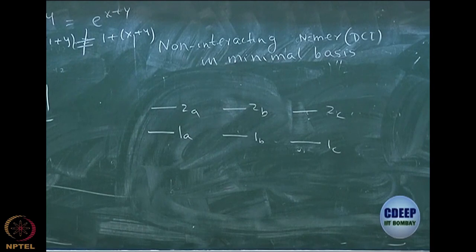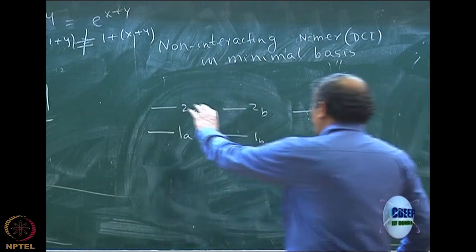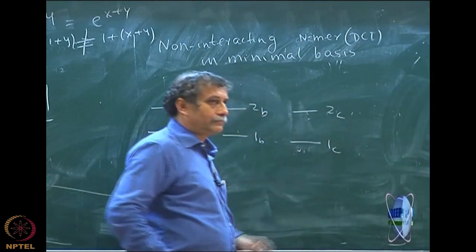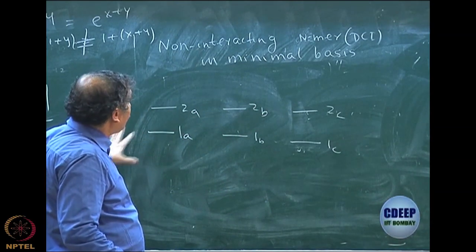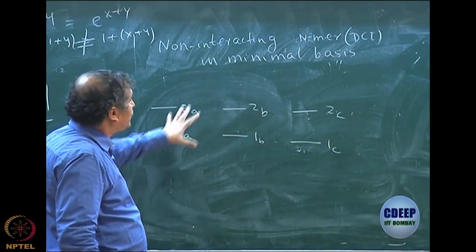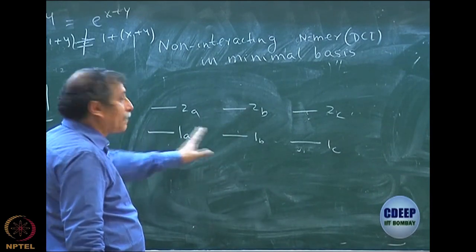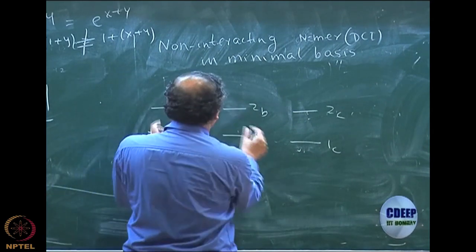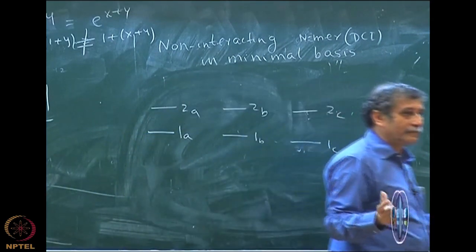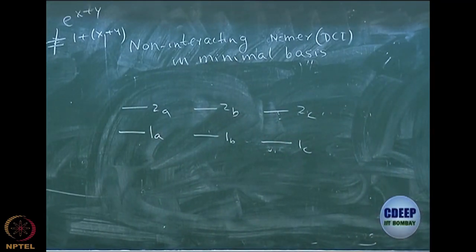If I do exact calculation, full CI, what will happen in DCI? When I do DCI, for each of them it is exact. But if I do DCI for the n-mer, you can see it is hopelessly wrong because lots of product terms — excitations between these — are all missing: n such terms, not just quadratic, but quadruple excited, hextuple excited, and all that, because there will be n such terms.